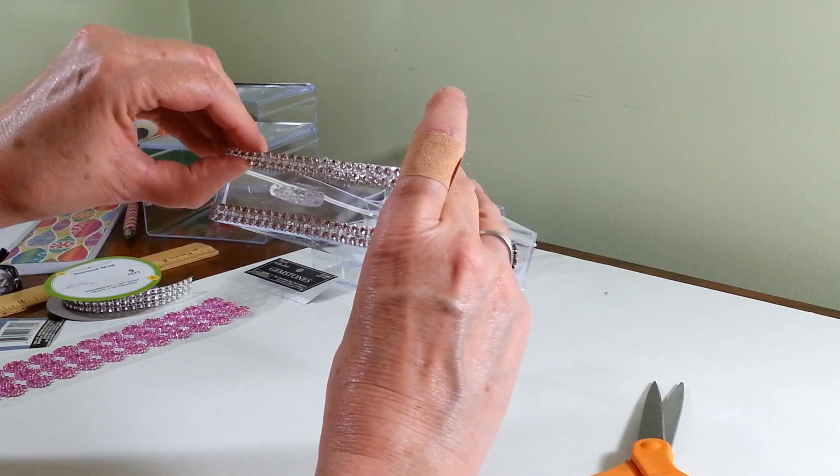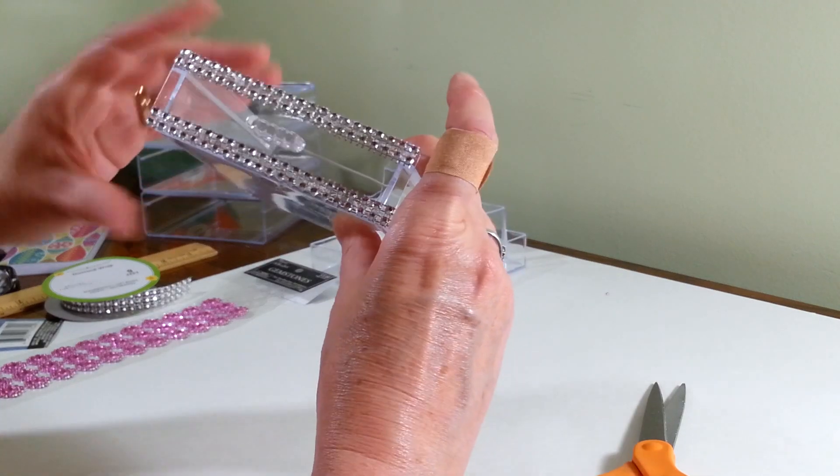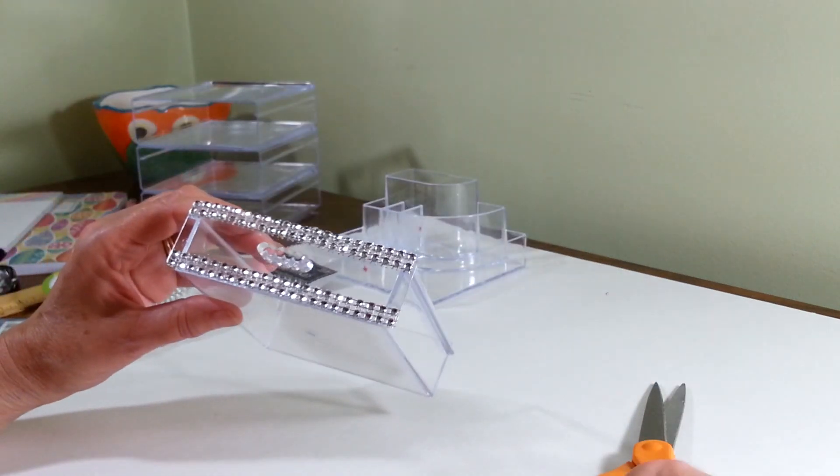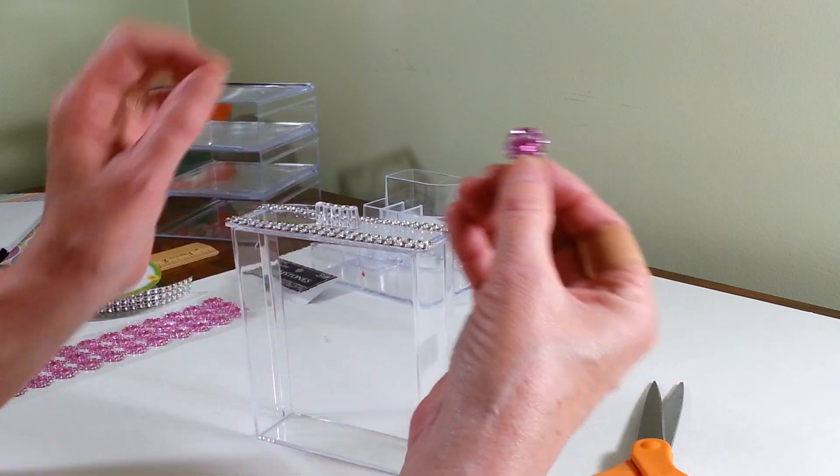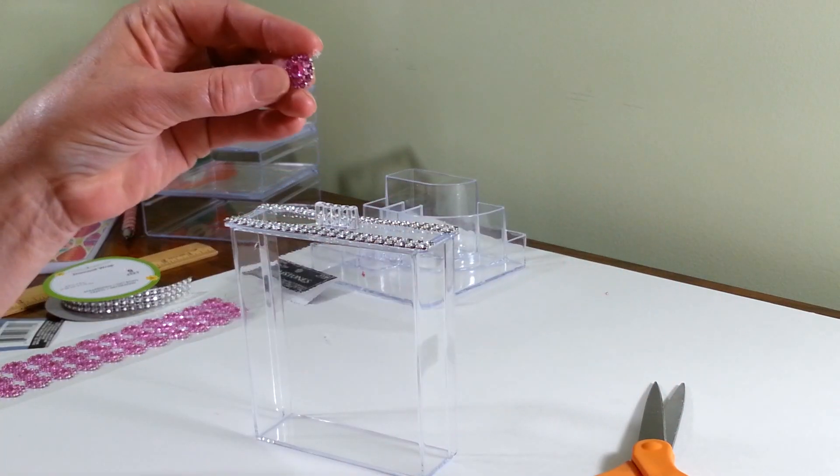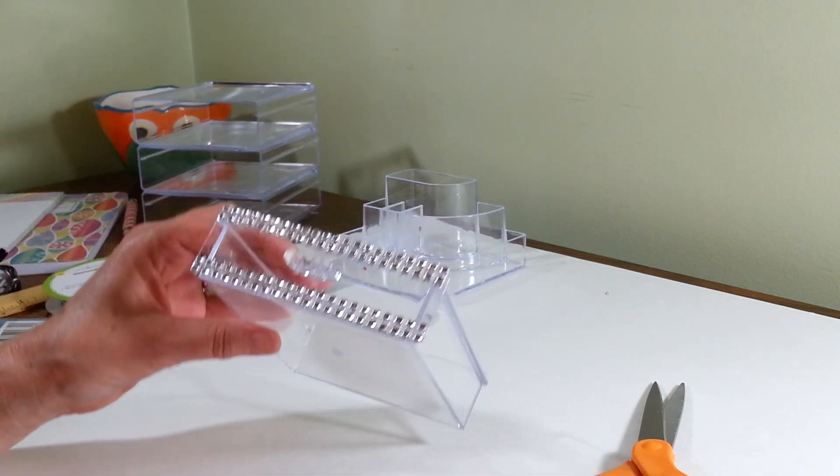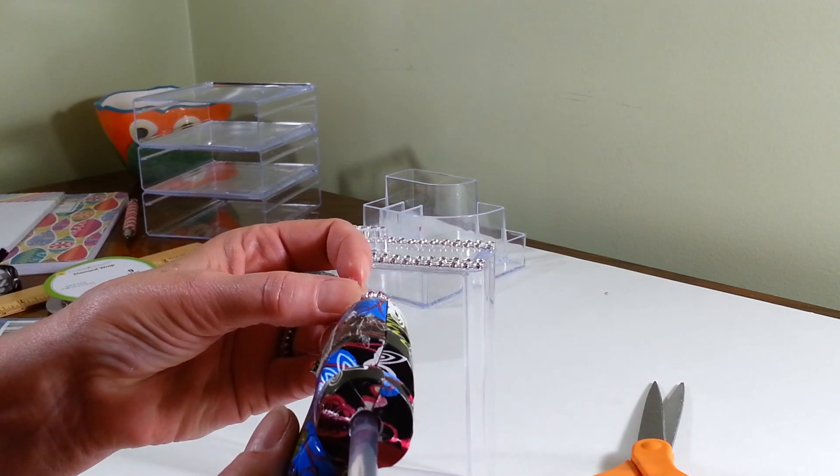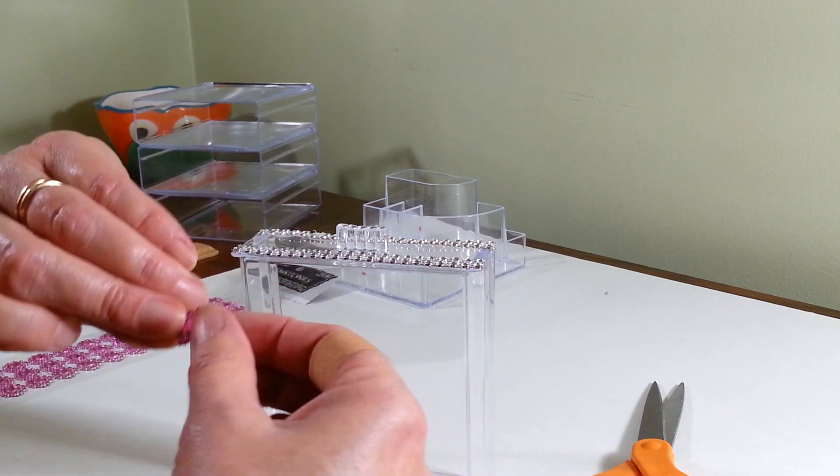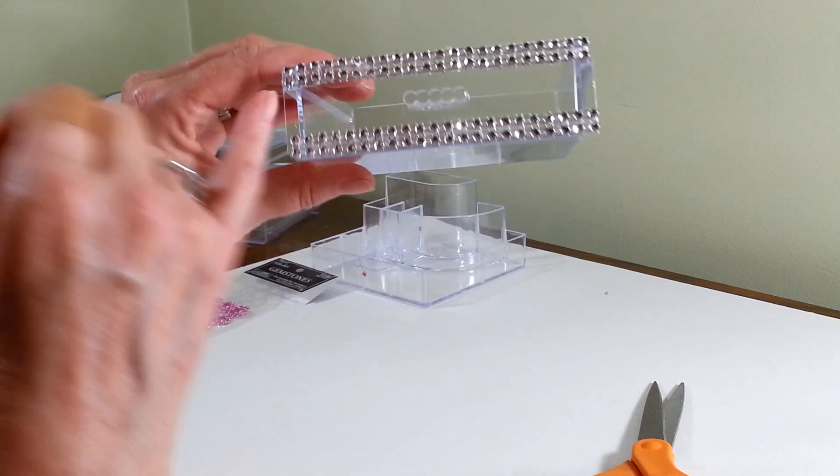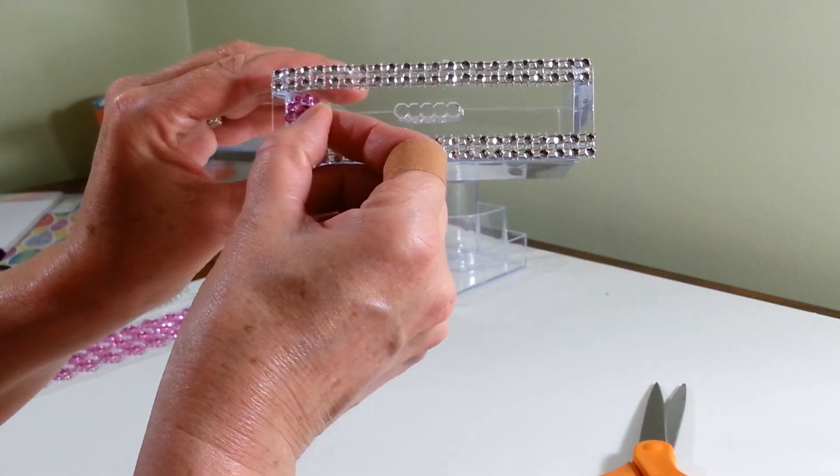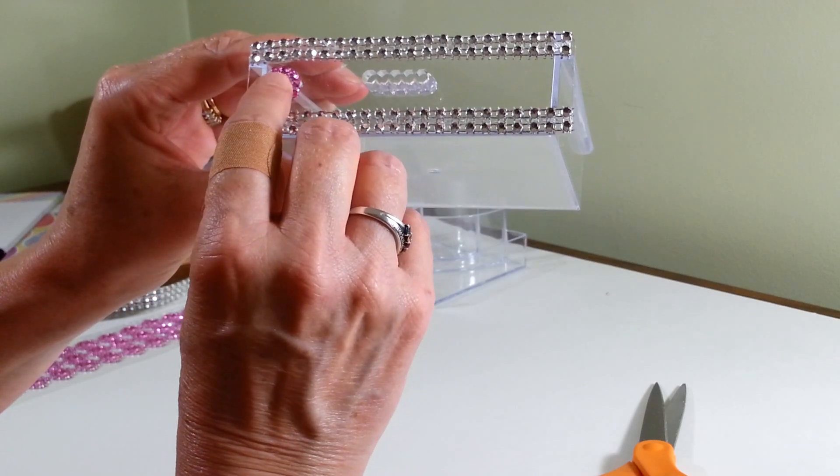Now I'm going to use four of these little flowers that I've cut off to put on here. I'm going to just add a dot of glue to the back and line it up with this little line here. I'll try to center it best I can.